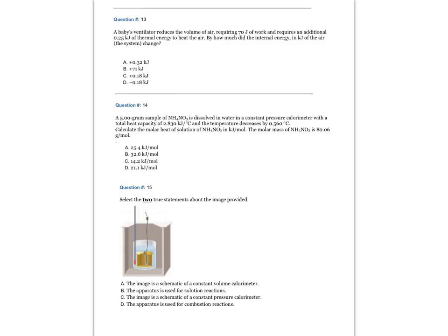Question number 13: The baby's ventilator reduces the volume of air requiring 70 joules of work and requires an additional 0.25 kilojoules of thermal energy to heat the air. By how much did the internal energy in kilojoules of the air, being the system, change?